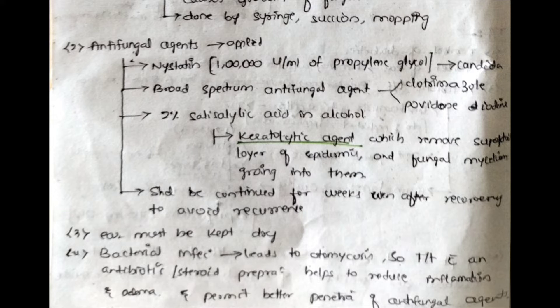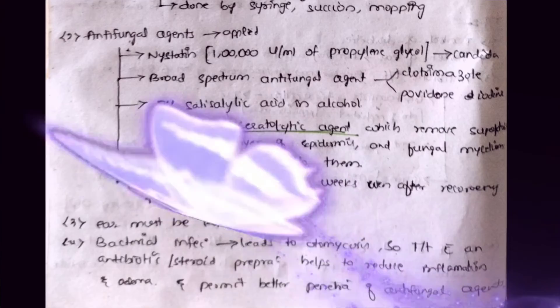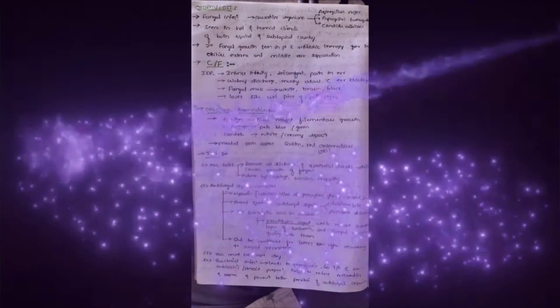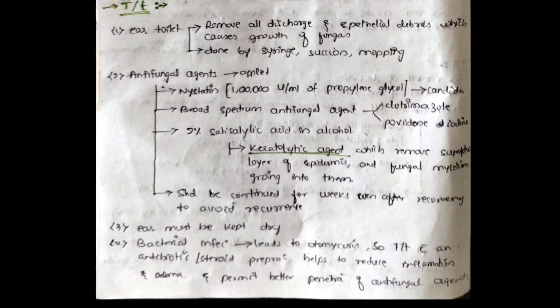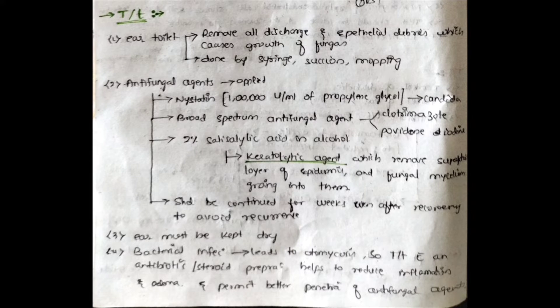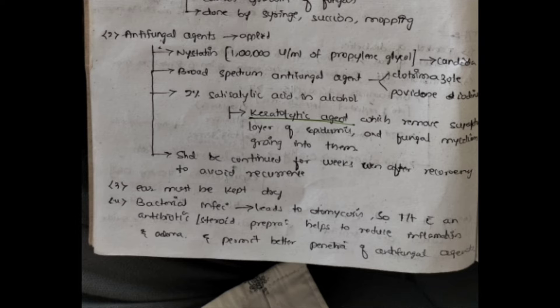Treatment should be continued for weeks even after recovery to avoid recurrence, as otomycosis has an increased risk of recurrence. The ear must be kept dry, because the fungus needs moist and humid conditions to grow — which is why it is most common in tropical and subtropical regions. When bacterial infection accompanies otomycosis, treatment with an antibiotic-steroid preparation helps reduce inflammation and edema, and permits better penetration of the antifungal agent.